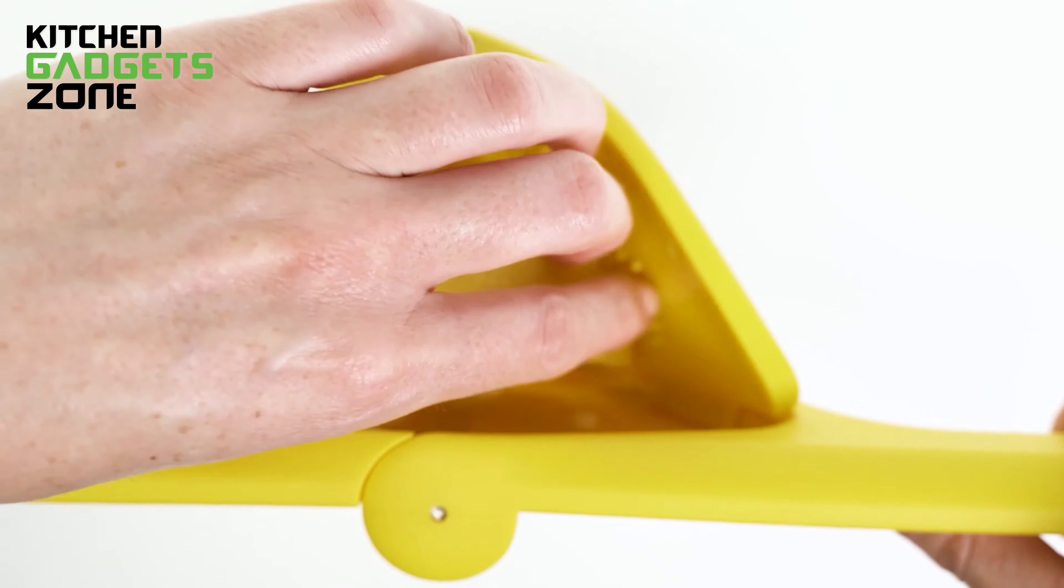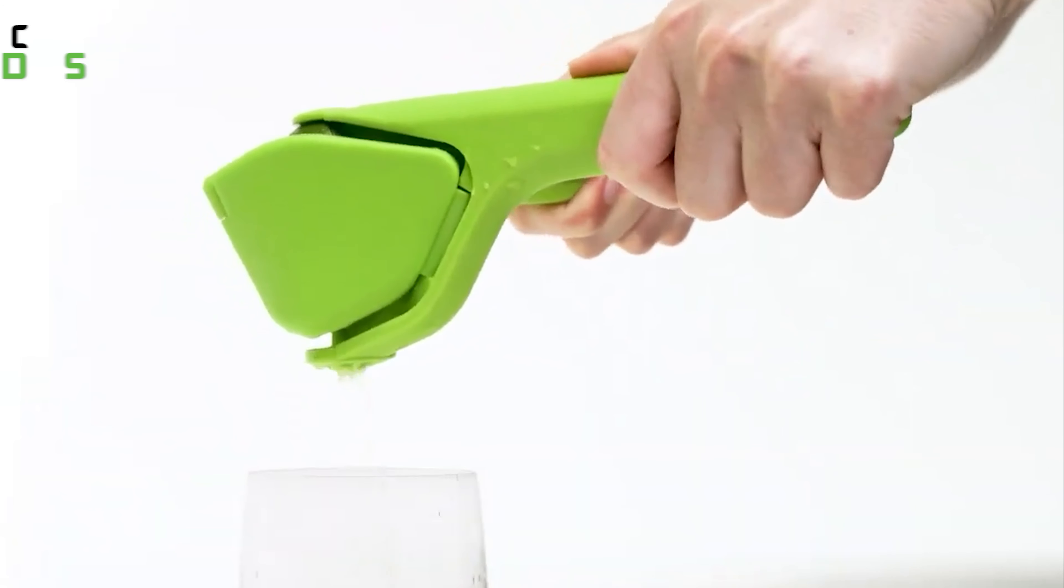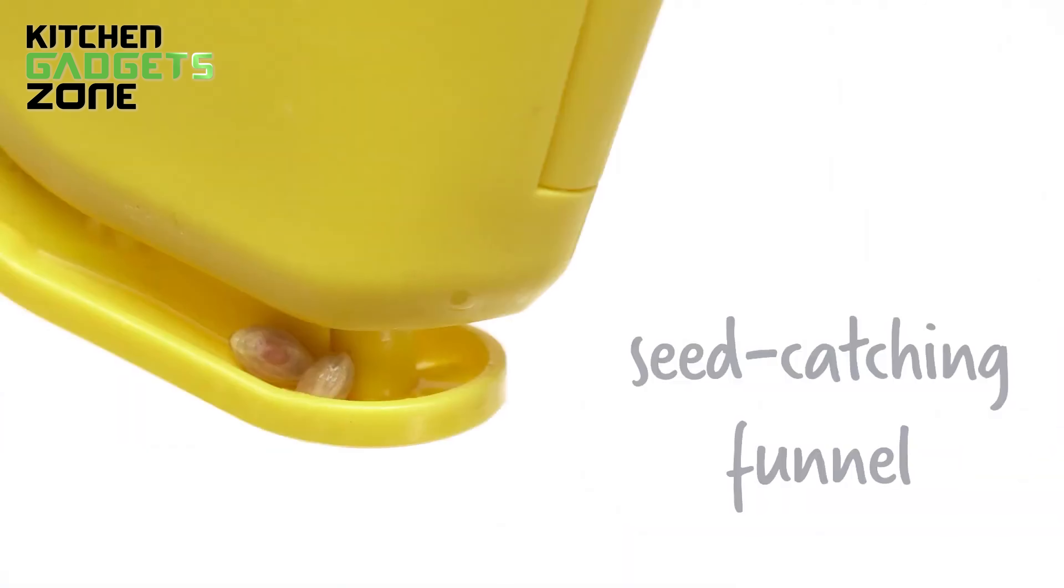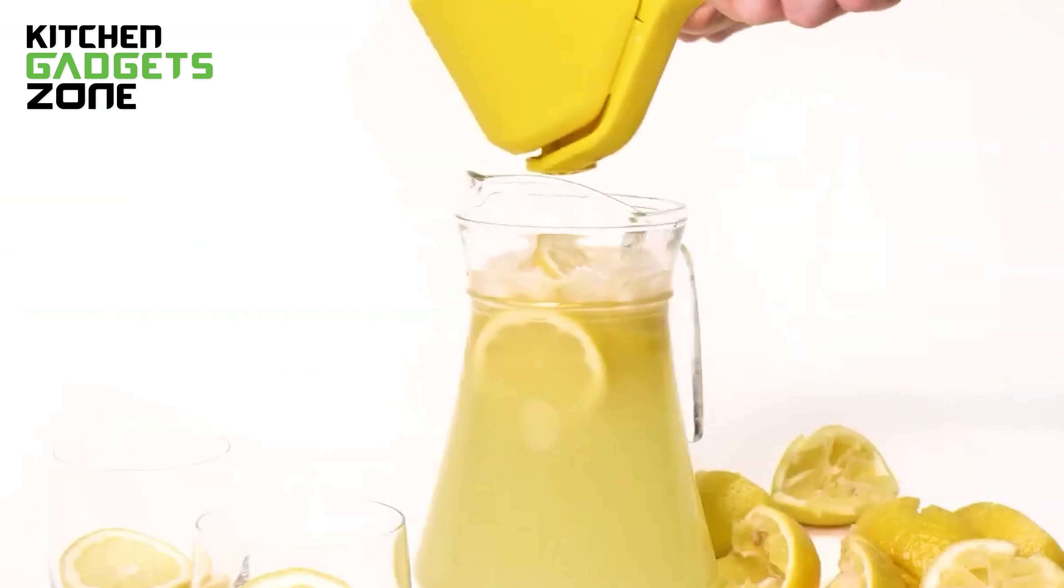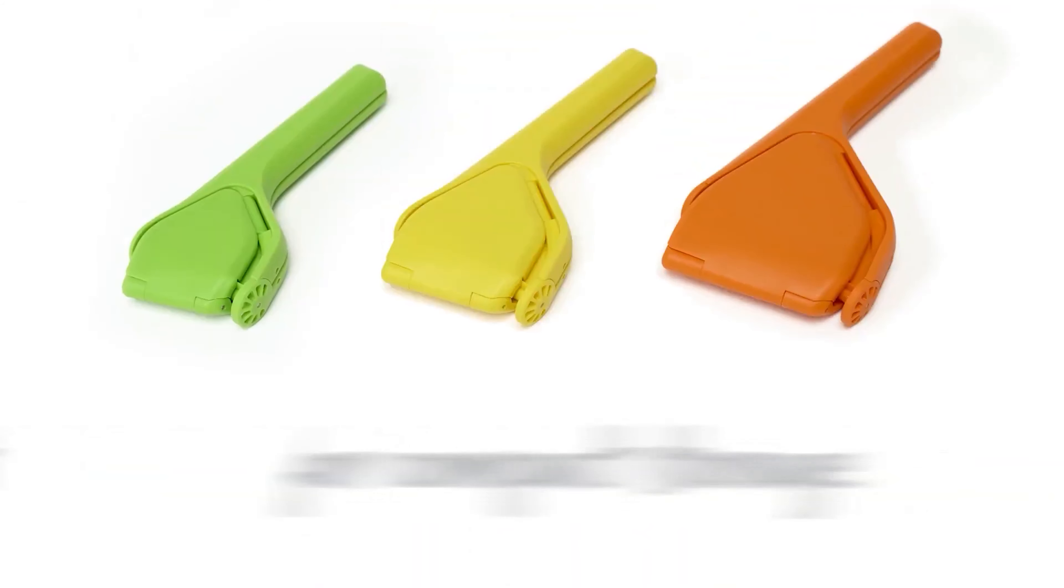The two-handed sideways pivot operation provides even more leverage, using the larger muscle groups of your arms instead of just your hands. The built-in pip catcher strains out any unwanted seeds or pulp, while also acting as a funnel to direct the juice flow. Plus, the Fluser folds completely flat for space-saving storage, with no bulky humps or bumps to wrestle into a drawer.